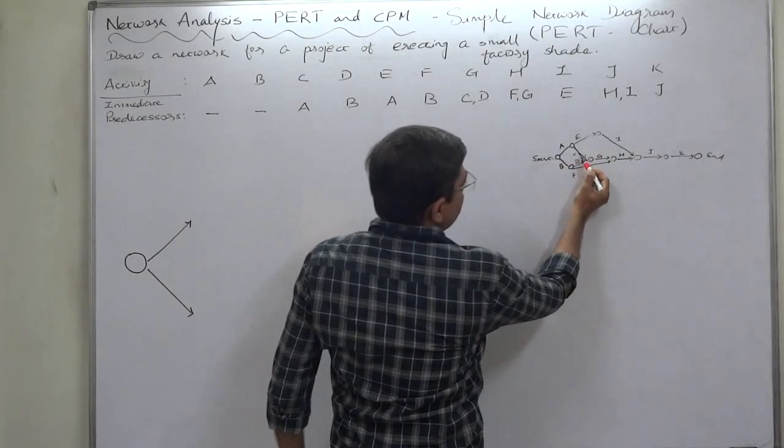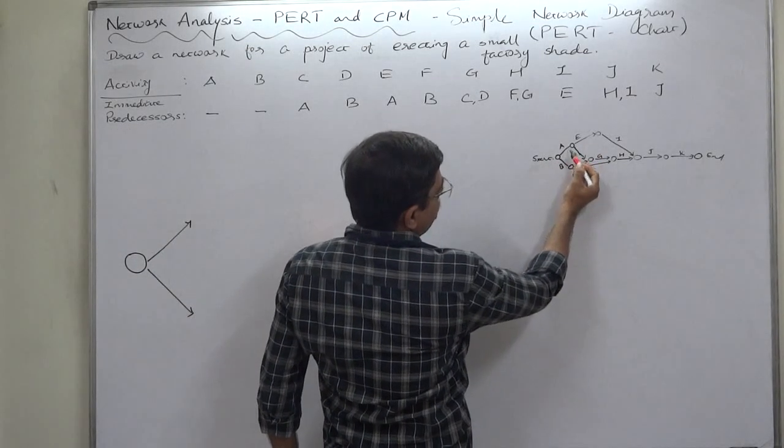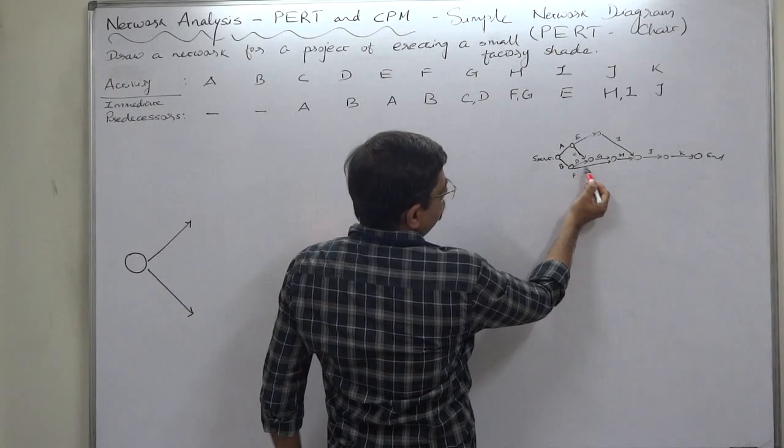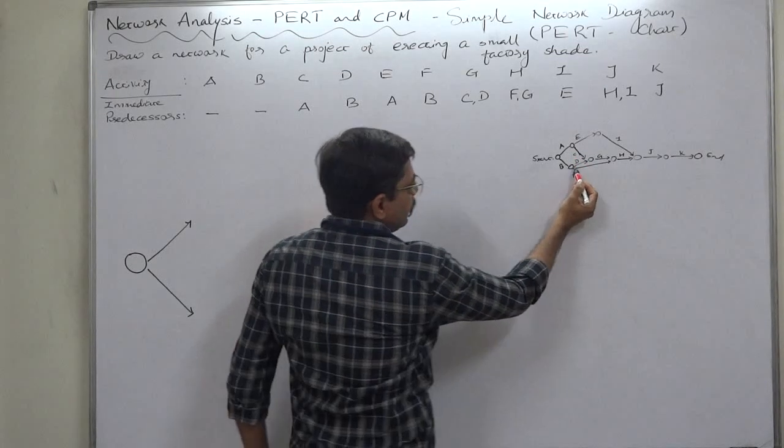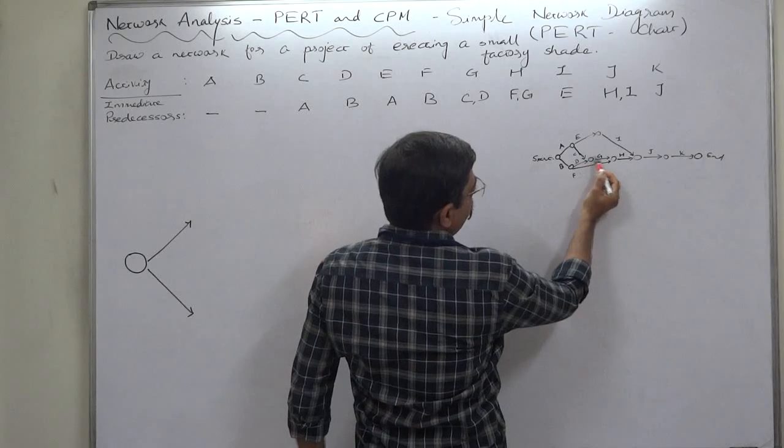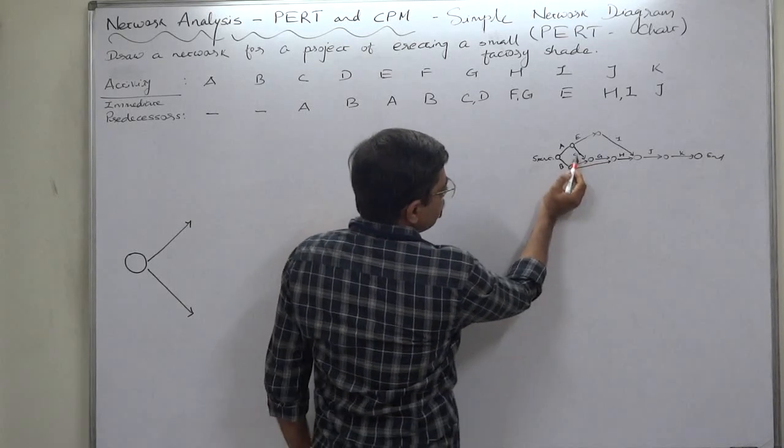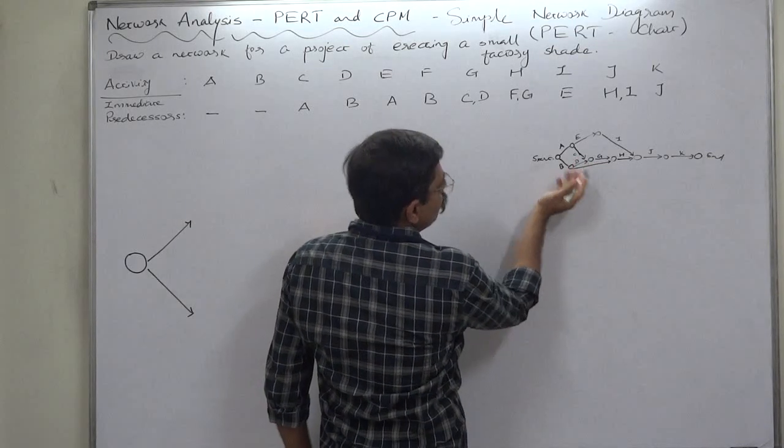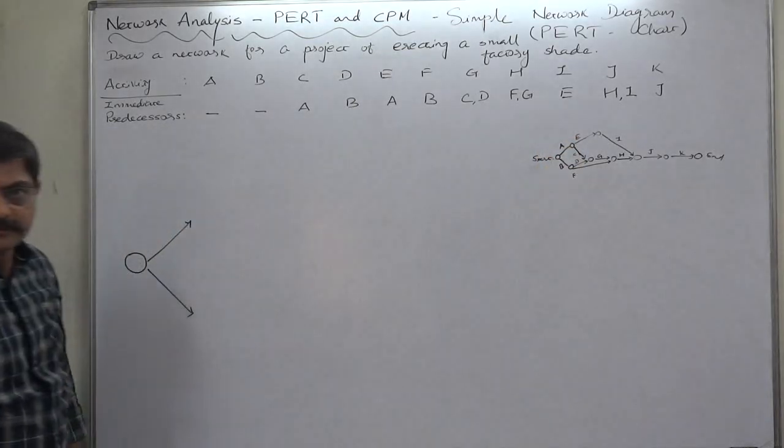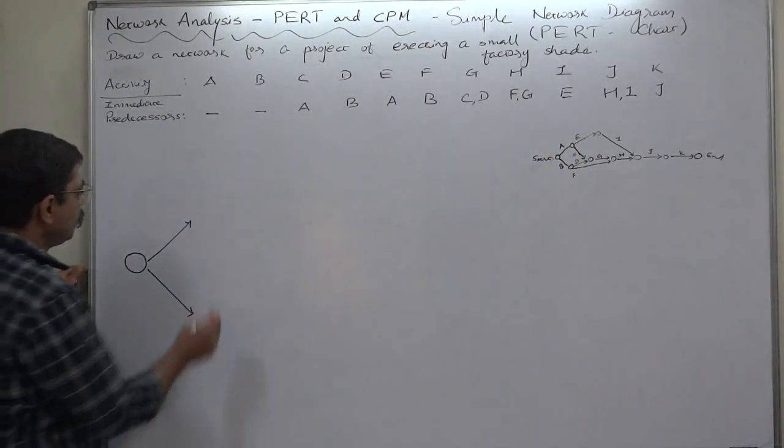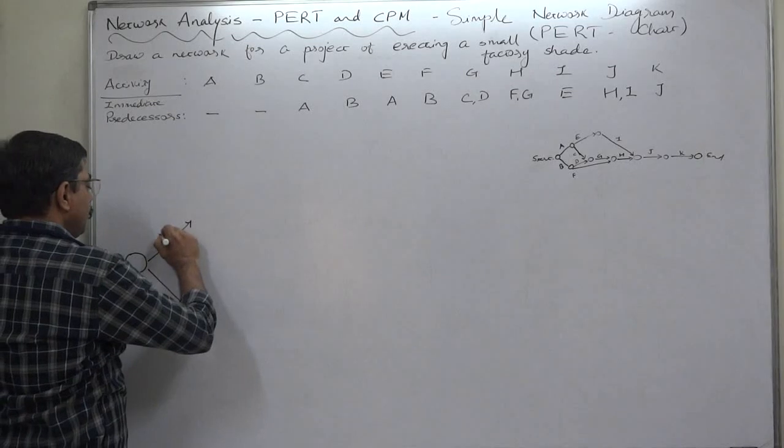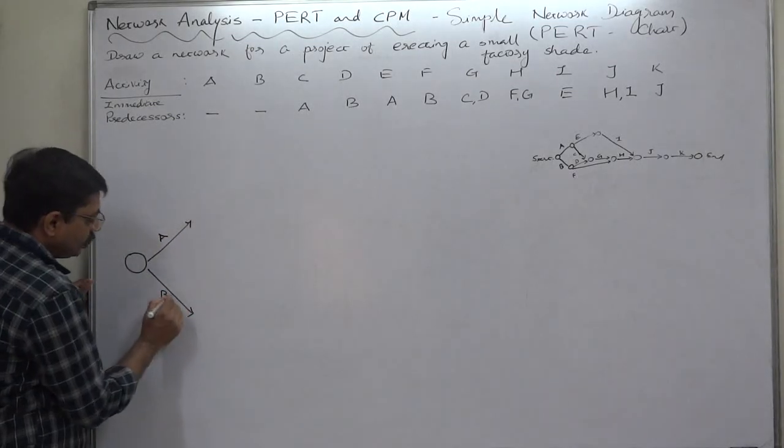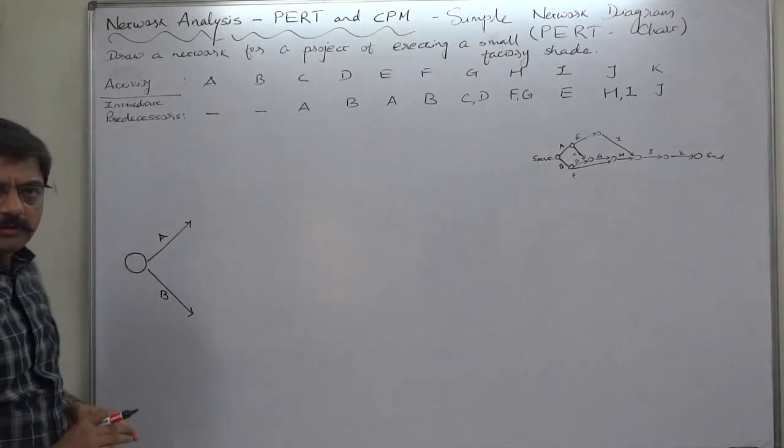Just think about the successor activities and draw a suitable chart. E starts after ending A. D and F start after ending B. C and D both are common predecessors of G, so it is advisable to take these two inside. We are going to name A to the upper arrow and B to the lower arrow.